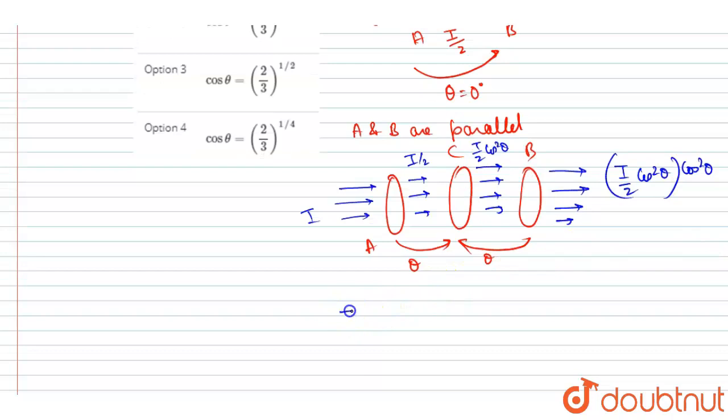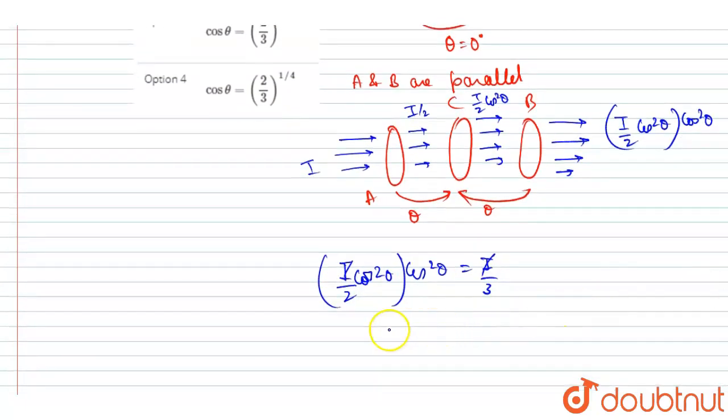Now it is said that after passing through B, it has an intensity of I by 3. So if we cancel this I, we can see the value of cos to the power 4 theta is 2 by 3.